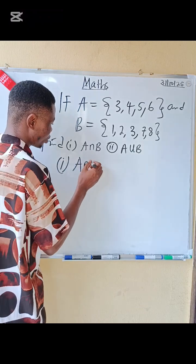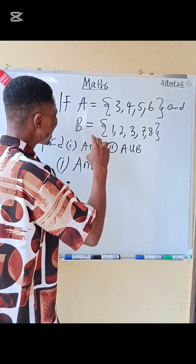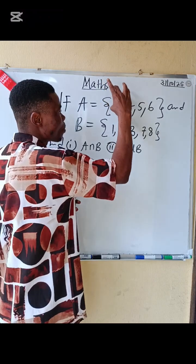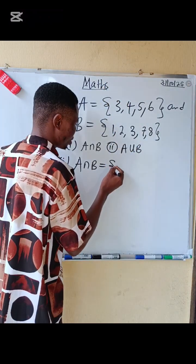A intersection B. From the word intersection, it means those elements that are in A that appear in A and also appear in B. So what are those elements? Let's see.